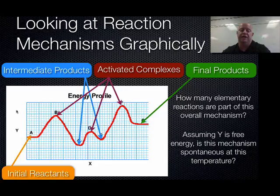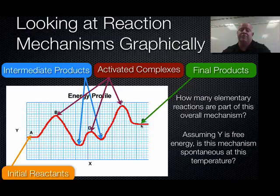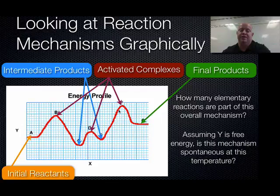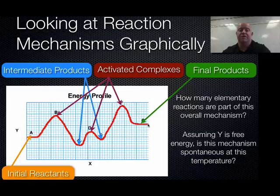Looking at the graph, with free energy on the Y-axis running left to right: point A is lower than the final point G, meaning energy was absorbed going from A to G — that's a positive value, which means the forward reaction A→G is non-spontaneous. The reverse direction, G back to A, would be the spontaneous direction.